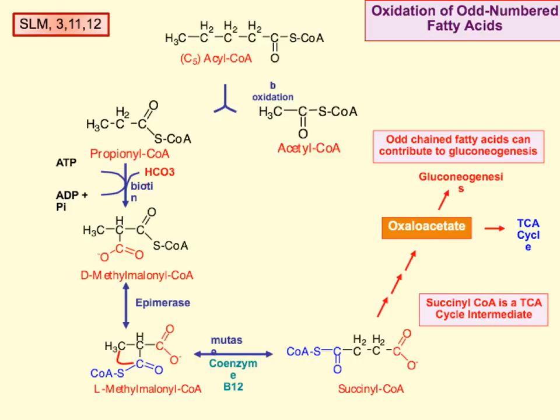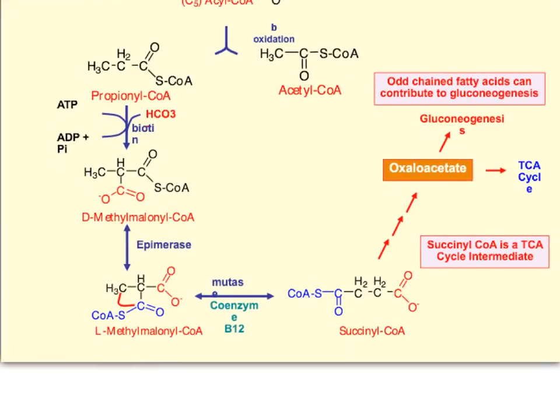Propionyl-CoA with bicarbonate, biotin, and ATP will produce D-methylmalonyl-CoA. The D-methylmalonyl-CoA will then be converted into L-methylmalonyl-CoA, and that will be converted into succinyl-CoA.